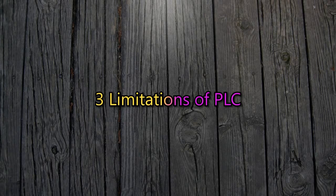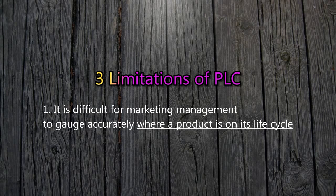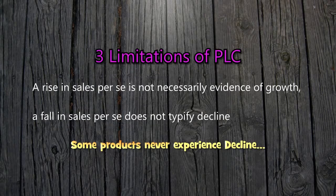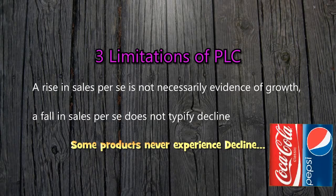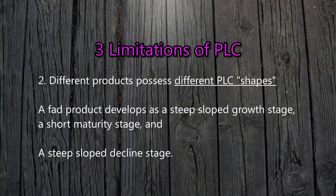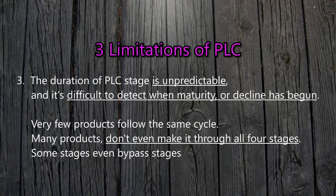There are some limitations of PLC. Firstly, it is difficult for marketing management to gauge accurately where a product is on its life cycle. A rise in sales is not necessarily evidence of growth, and a fall in sales does not typify decline — some products, such as Coca-Cola and Pepsi, may not experience a decline. Secondly, differing products possess different PLC shapes. A fad product develops with a steep-sloped growth stage, a short maturity stage, and a steep-sloped decline stage, while products like Coca-Cola and Pepsi experience growth but also a constant level of sales over decades. Thirdly, for specific products the duration of each PLC stage is unpredictable, and it's difficult to detect when maturity or decline has begun. Very few products follow the same cycle, and many products don't even make it through all four stages — some even bypass stages, for example going straight from the introduction stage to the maturity stage.